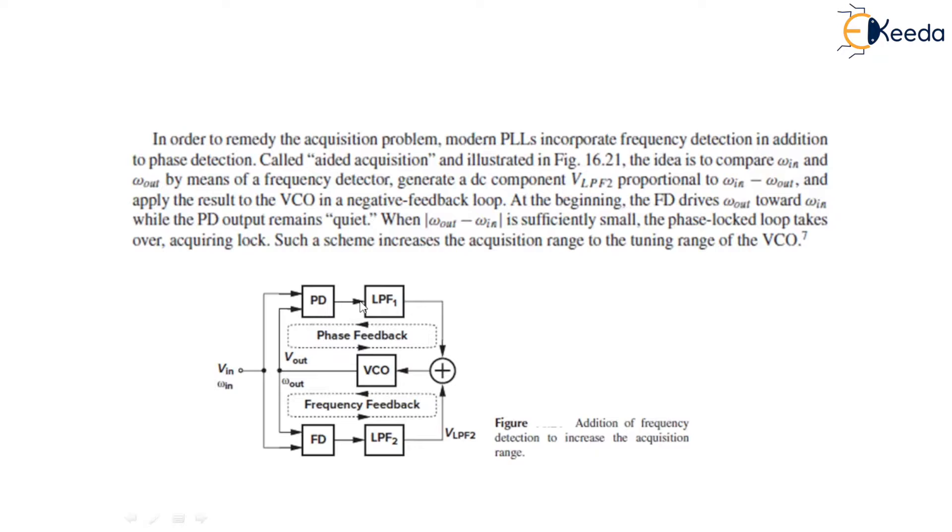This phase detector generates a DC component, V LPF2, which is proportional to omega in minus omega out and we apply the result to the VCO in a negative feedback loop. And at the beginning, this FD, that is frequency detector, drives W out towards W in, while this PD, that is phase detector, remains quiet. When W out minus W in is sufficiently small, then phase lock loop takes over and acquires lock and such a scheme increases the acquisition range to the tuning range of the VCO.